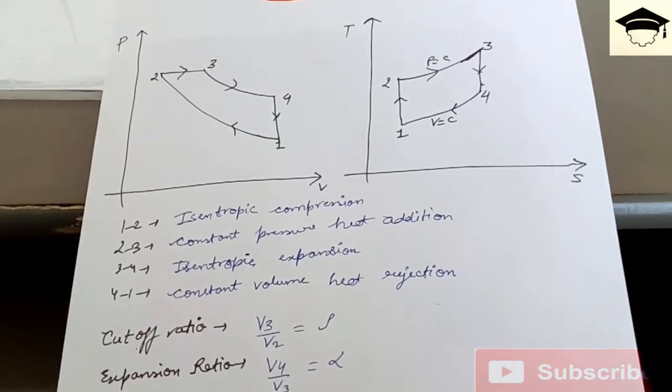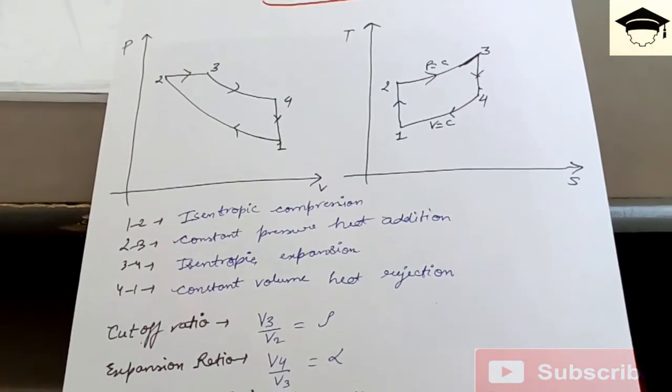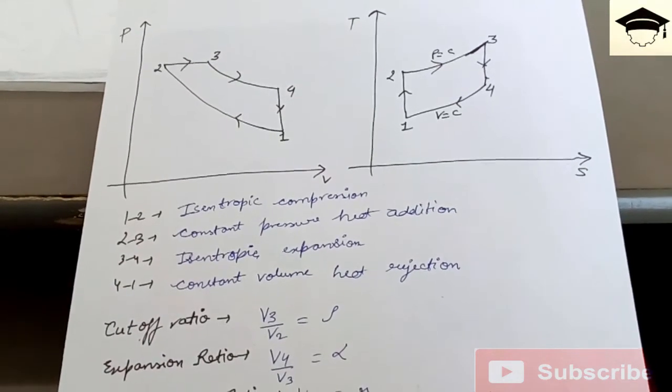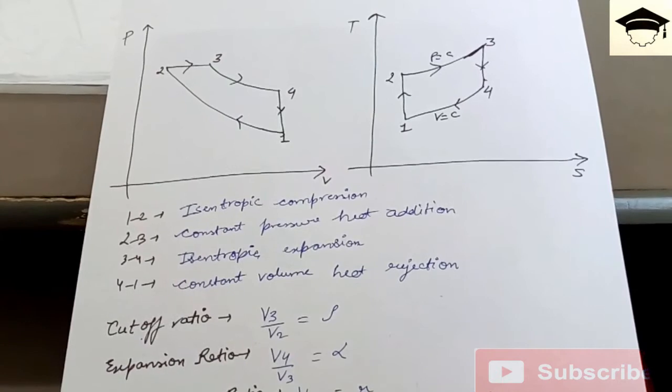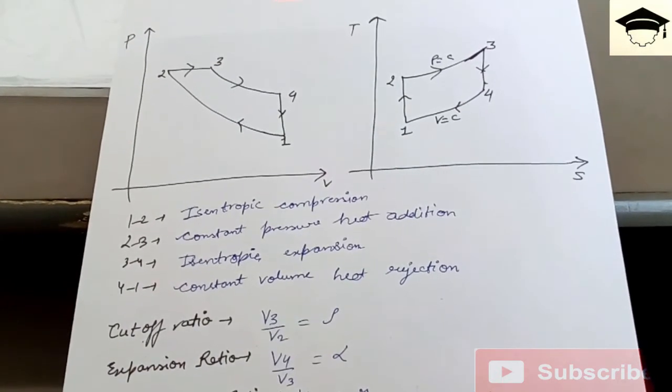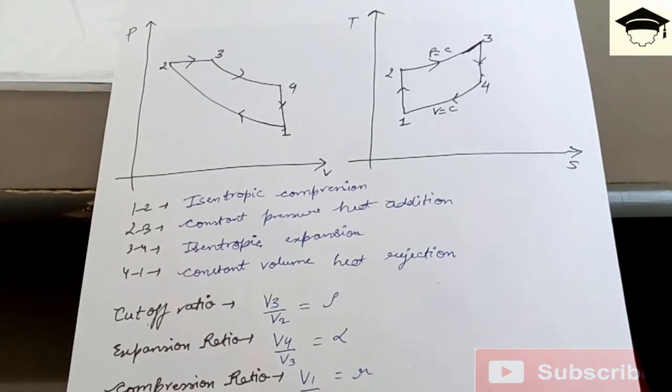Expansion ratio is given by V4 upon V3, denoted by α (alpha). Compression ratio is given by V1 upon V2, denoted by r.